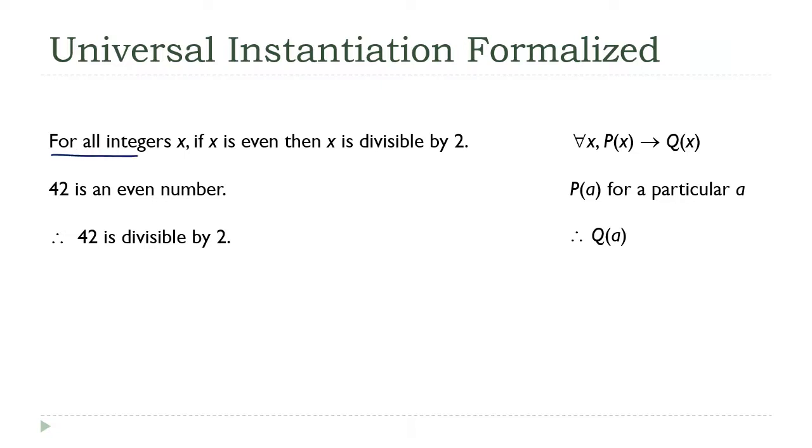for all x, if p of x, then q of x. So, referring back to our example, p of x would be x is even, and q of x would be x is divisible by 2.